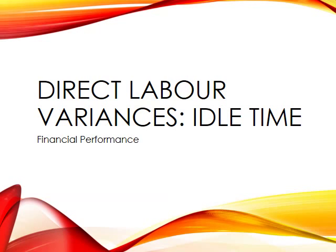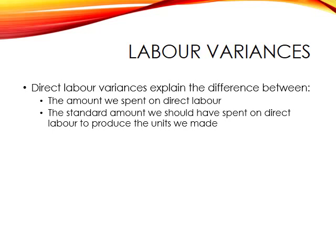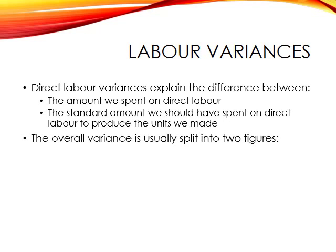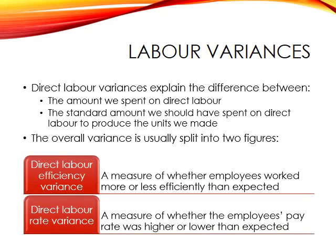In this session, we shall look at the effect of idle time on our direct labour variances. As we saw previously, the direct labour variances try to explain the difference between the amount we actually spent on direct labour and the amount we should have spent on labour in producing the units we actually made. Typically, we split that overall variance into two figures: a direct labour efficiency variance, which measures whether employees worked efficiently, and a direct labour rate variance, which shows whether we paid employees at a higher or lower rate per hour than expected.